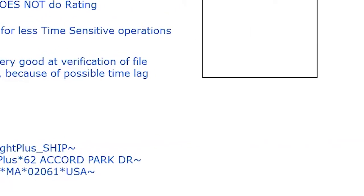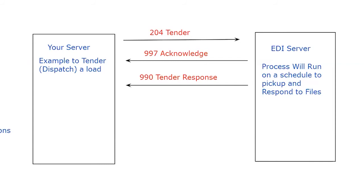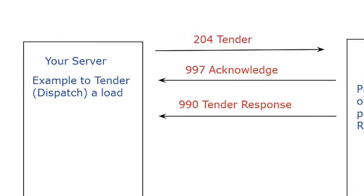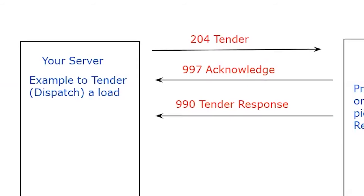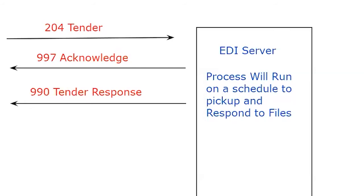So how does EDI work? You're going to need a server that can make an EDI file. In this case, we're looking at the 204 tender as a small example, though there are thousands of different types of EDI. We usually use what's called the X12 standard in the transportation industry. There are other standards for healthcare, financial, and other businesses, but X12 keeps everyone on the same page. So when you send a 204 tender, your server makes a tender 204 — about 40 lines long — and sends it over to the carrier's EDI server. That file will sit there until a scheduled process runs to pick it up.